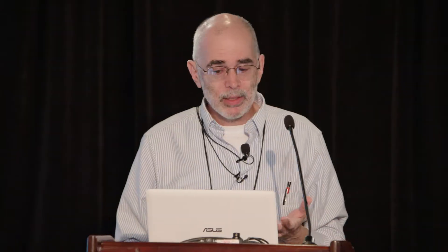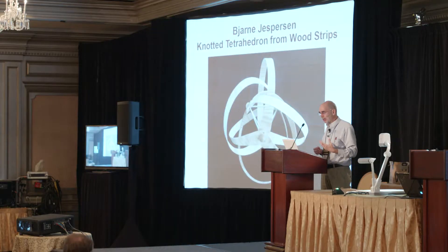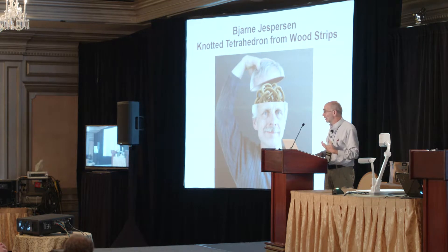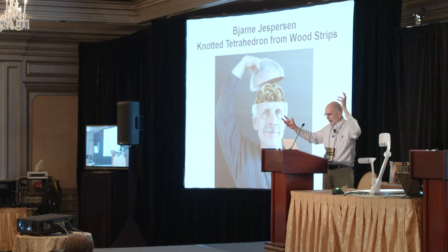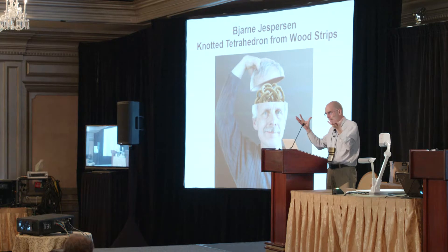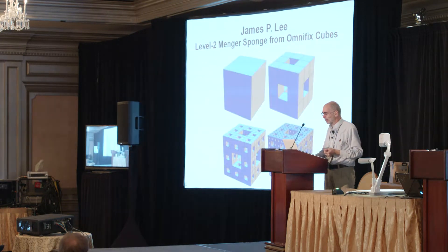Jarn Jespersen has designed a wooden sculpture based on a tetrahedron where the pieces go through each other in an intricate kind of knot. You can help put it together — I think it involves glue and clamps. That will be a sculpture that remains in the Martin Gardner collection.